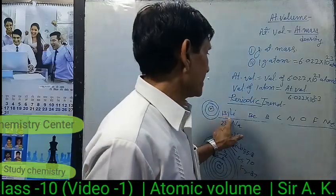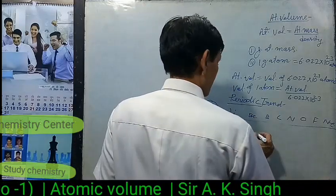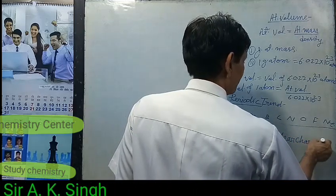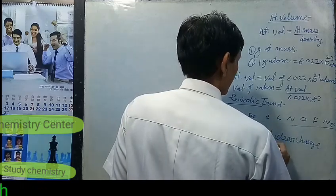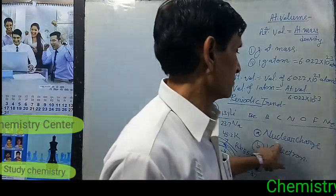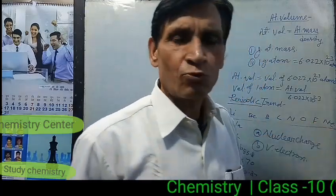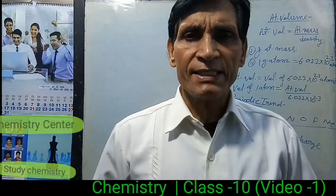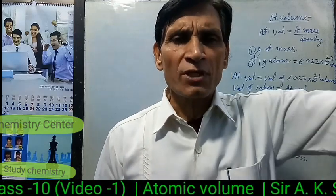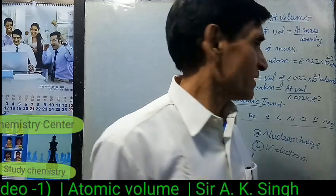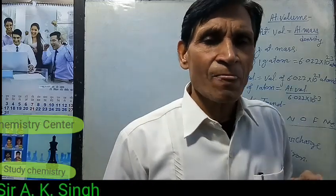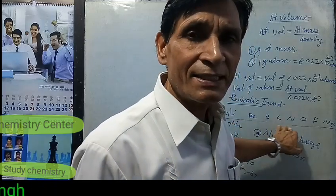The variation of atomic volume across a period depends on two factors. The first factor is nuclear charge. On moving across a period from left to right, nuclear charge increases with the increase in atomic number. As a result, nuclear pull on the outer electrons increases because effective nuclear charge is increasing, causing atomic volume to decrease across a period.